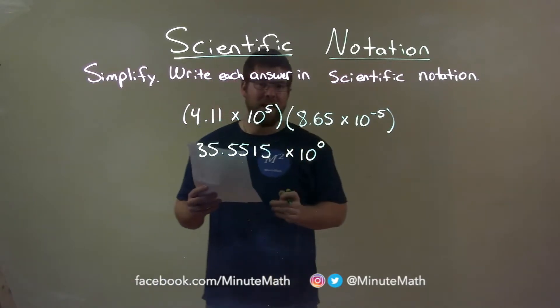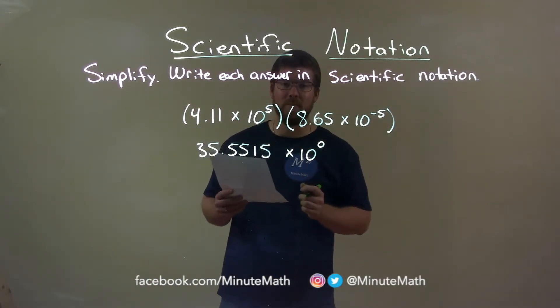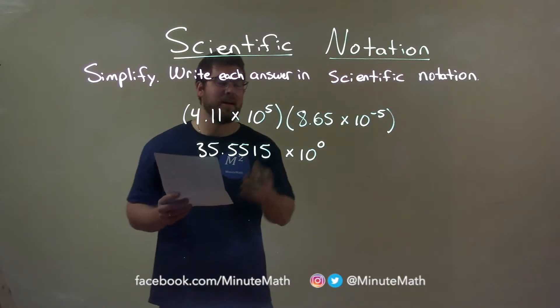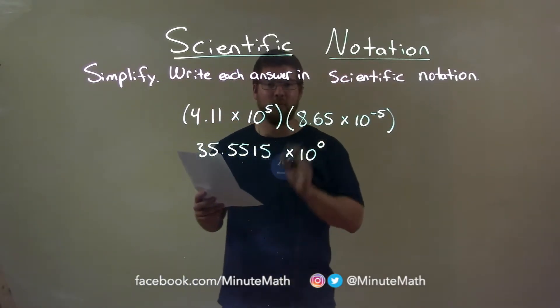Before you get ahead of yourself, 10 to the 0th power is still just 1. But since our final answer has to be in scientific notation, we're going to keep it for right now.